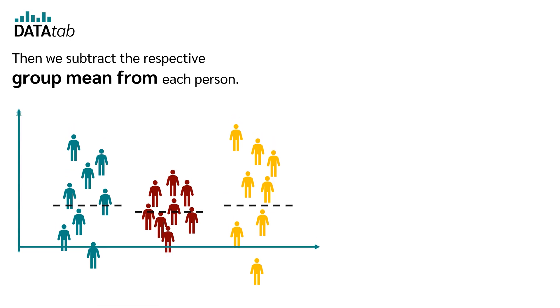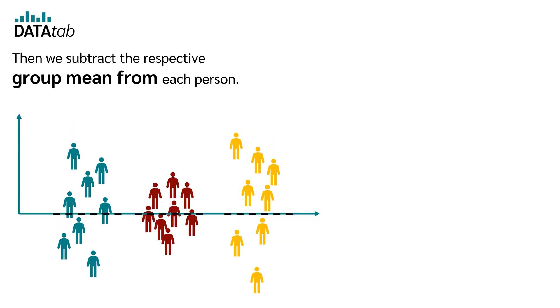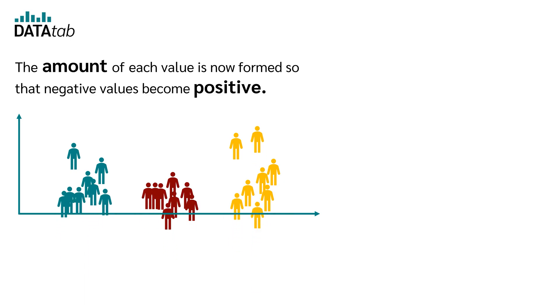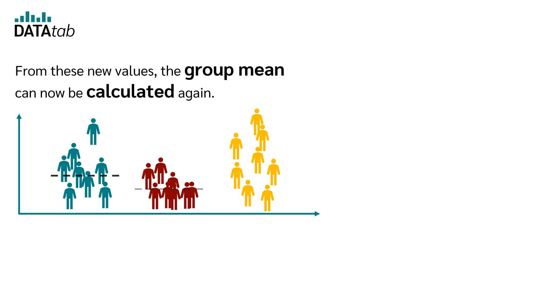Then we subtract the respective group mean from each person. The amount of each value is now formed so that the negative values become positive. From these new values, the group mean can now be calculated again.